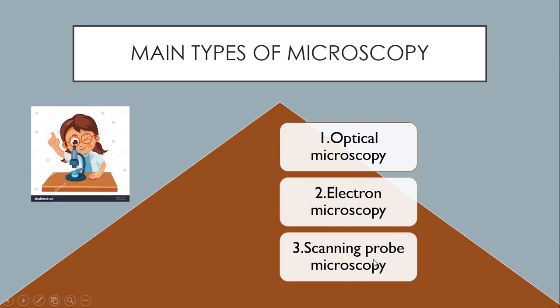Scanning probe microscopy. In scanning probe microscopy, probe is used. With the help of probe, first the object is scanned and then it is visualized. So there are three main types of microscopy. First is optical microscopy which uses light to see the object. Second is electron microscopy which uses electron beam to see the object.